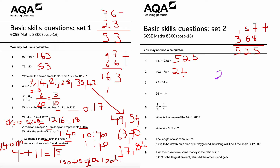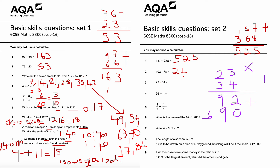Question three: 23 times 34. Doing 4 times 3 is 12, write 2 carry the 1. 4 times 2 is 8, plus 1 is 9 — giving 92. Then put a zero as a placeholder. 3 times 3 is 9, and 3 times 2 is 6 — giving 690. Adding 92 plus 690: 2 plus 0 is 2, 9 plus 9 is 18 carry the 1, 6 plus 1 is 7. So the answer is 782.